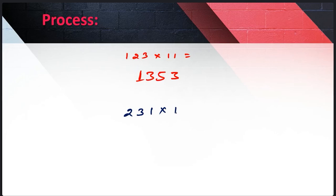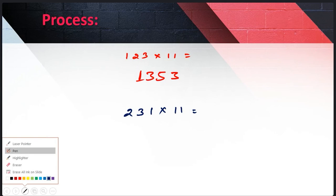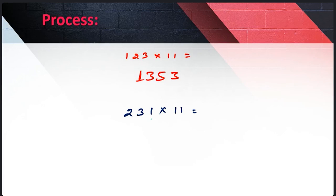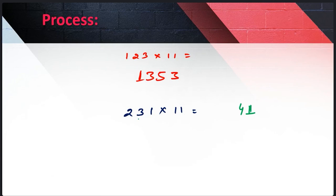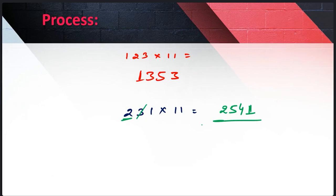The process is very simple. For 231 multiplied by 11: first, I start with the one-digit number so 1 is the first part of the answer. Second, 3 plus 1 is 4. Now we have only two digits here, so I am adding only two digits. After that we add the next digit and this one is eliminated. Now tell me: 2 plus 3 is 5. Now this 3 is also eliminated and 2 remains, so the answer is 2541.